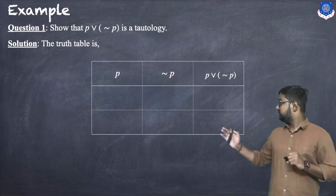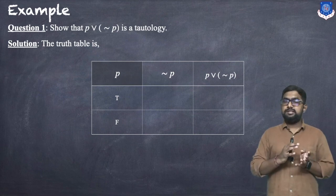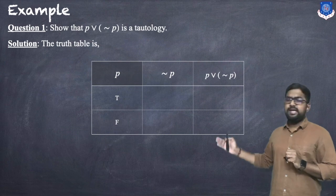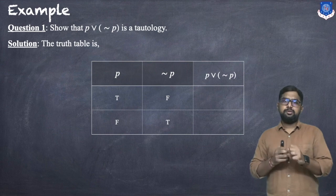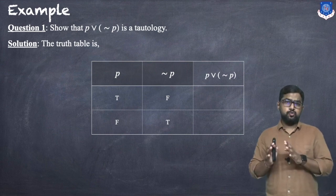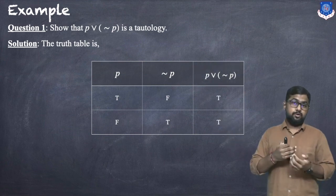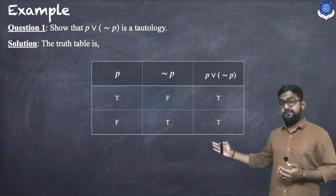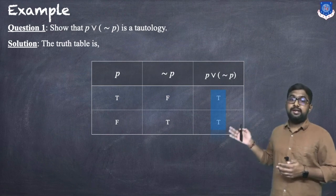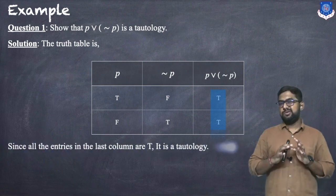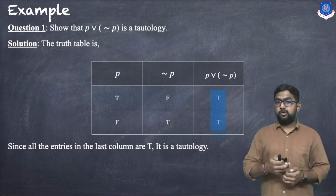For p we have T and F. For ¬p, which is simply the negation of p, we have F and T. For p∨¬p: since OR is true whenever any statement is true, the first row gives T (T or F) and the second row gives T (F or T). Since all entries in the final column are true, it is a tautology.